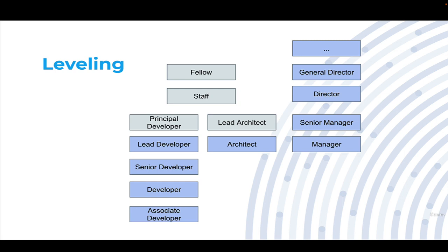It works much like a pyramid with two main parts. On the far left side we have our technical track, known as individual contributors — these are people that typically don't have other people reporting to them. On the far right we have our management track, where their whole purpose is to have people report into them. At the very bottom of this pyramid we have the associate level or junior level developer.